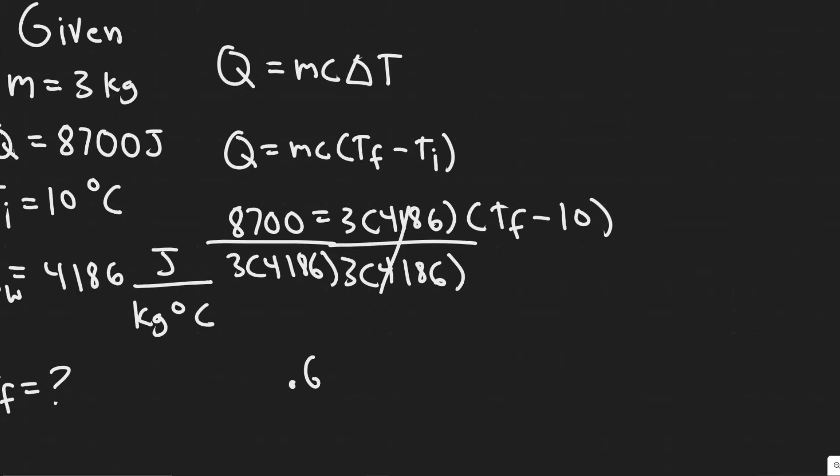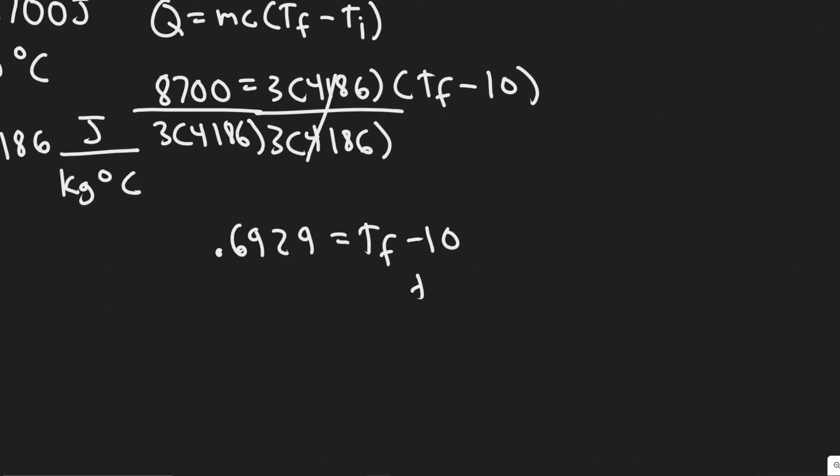You will get 0.6929 equals T final minus 10, and then to solve for T final, you would just add. So we just add 10 to this value, and you'll get T final is equal to 10.693.